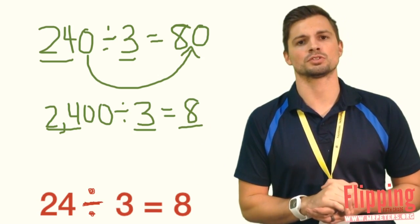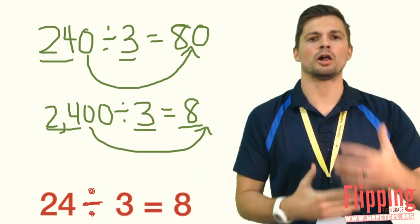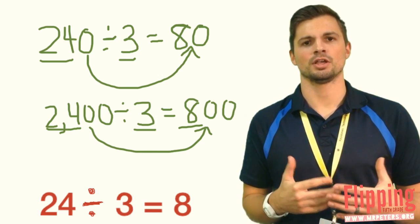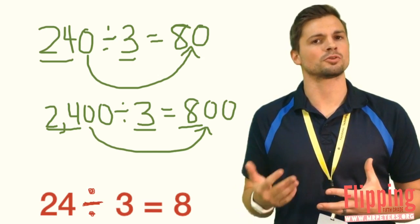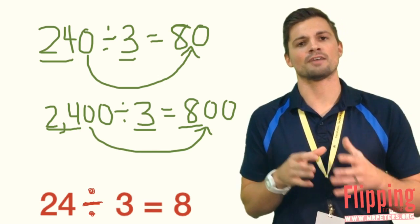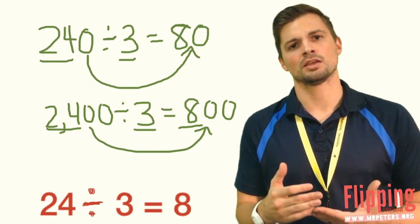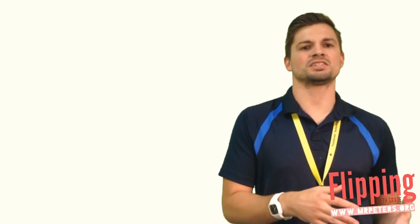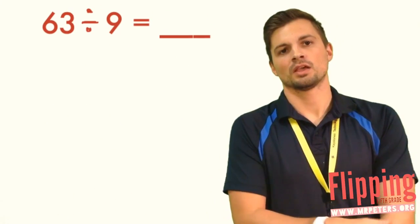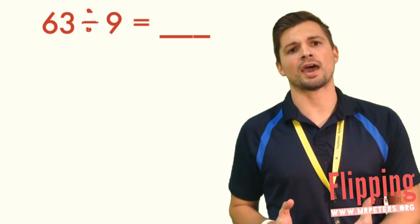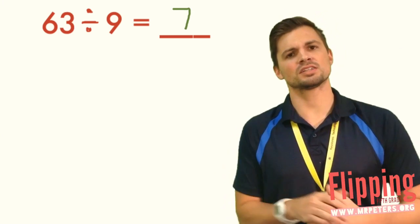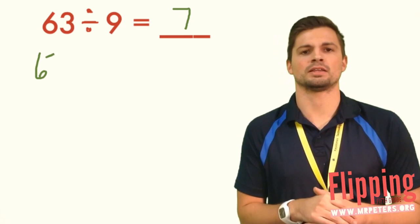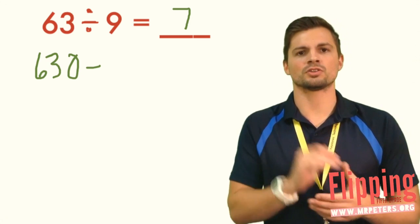So we underline again that 24 and underline the 3. 24 divided by 3 is 8, and we add two zeros to the end. So again, we're following that same pattern here that we followed before. That is all we're doing with this: to find the quotient of larger numbers that have multiples of 10 and 100. To look at another problem, we take 63 divided by 9.